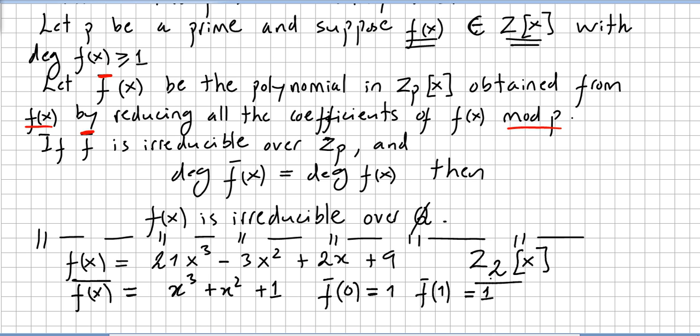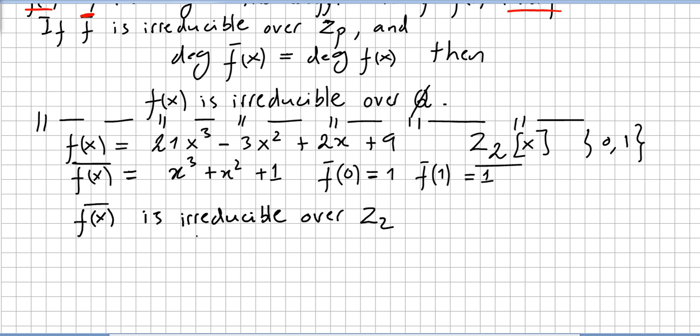Choosing Z₂ was really handy. All the calculations became really easy. In Z₂, so we are talking about 0 and 1, very handy. f̄(0) = 1, f̄(1) = 1. So we can say that f̄(x) is irreducible over Z₂. And that implies that f(x) is irreducible over the rationals.